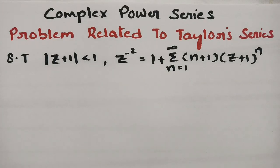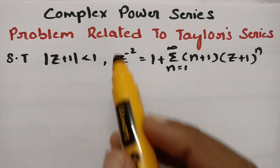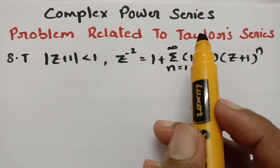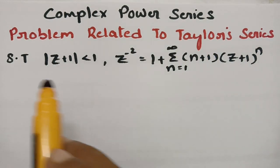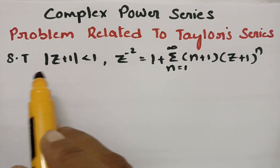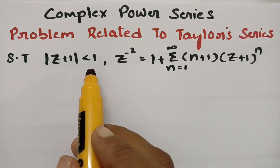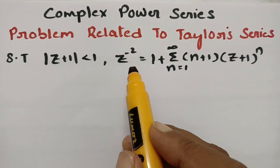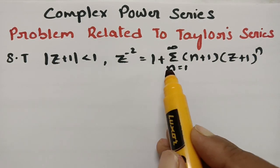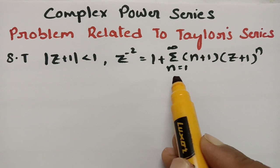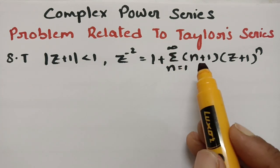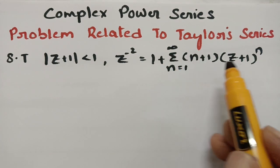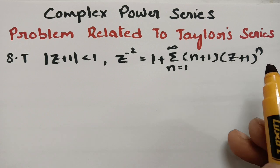This video is on the problem related to the Taylor series expansion, and this topic is from complex power series. In today's video I am going to show that modulus of z plus 1 is less than 1, z to the power minus 2 is equal to 1 plus sigma n equals 1 to infinity of (n+1) times (z+1)^n.